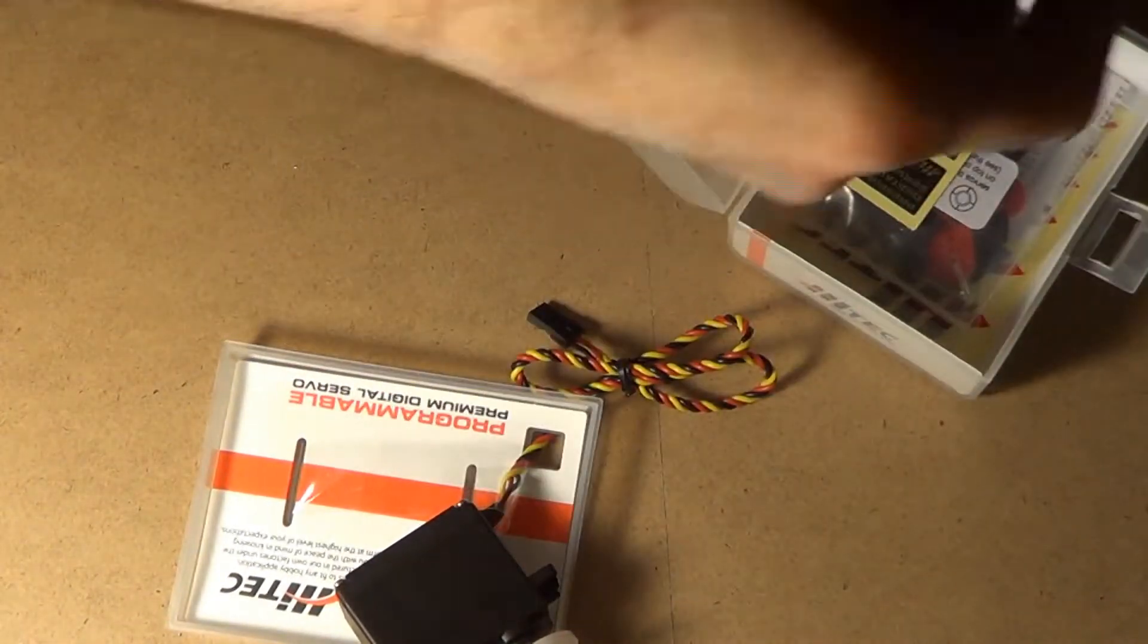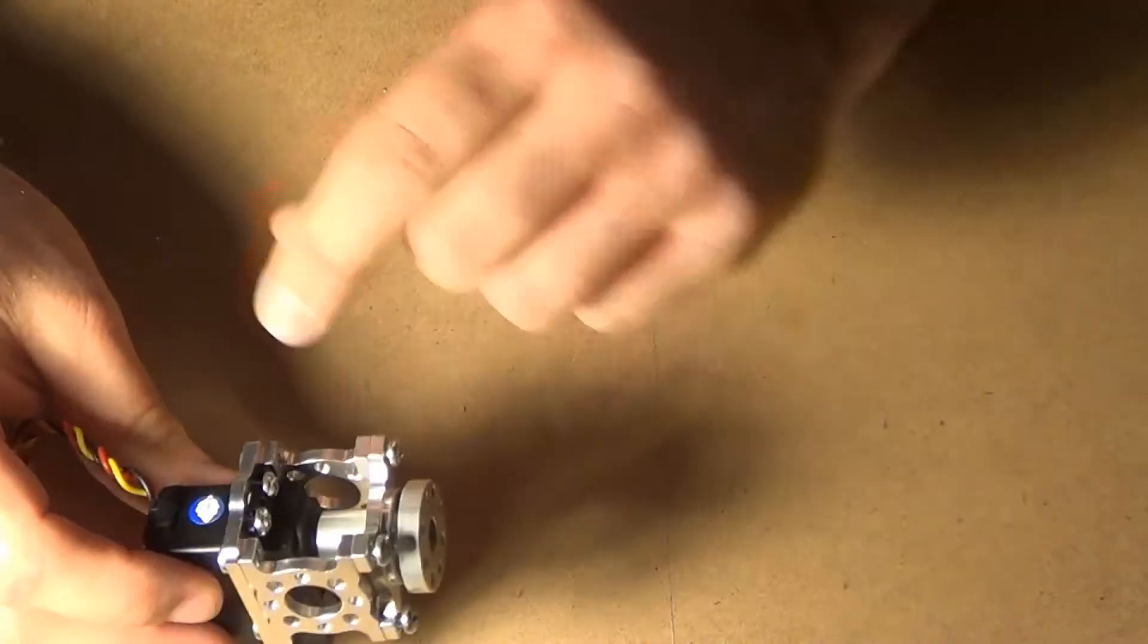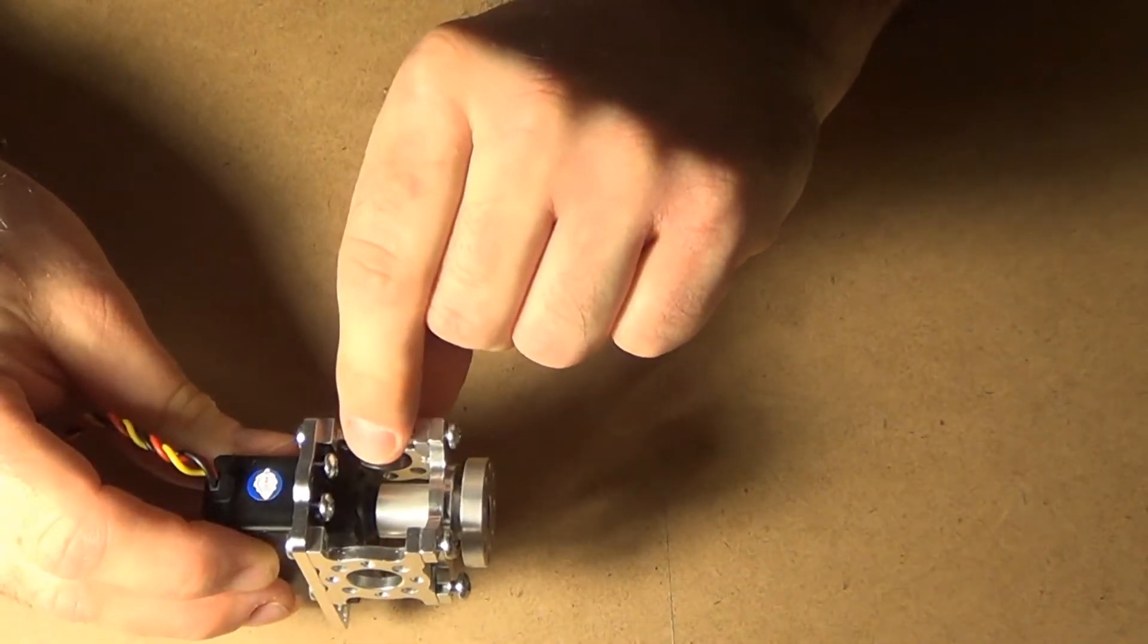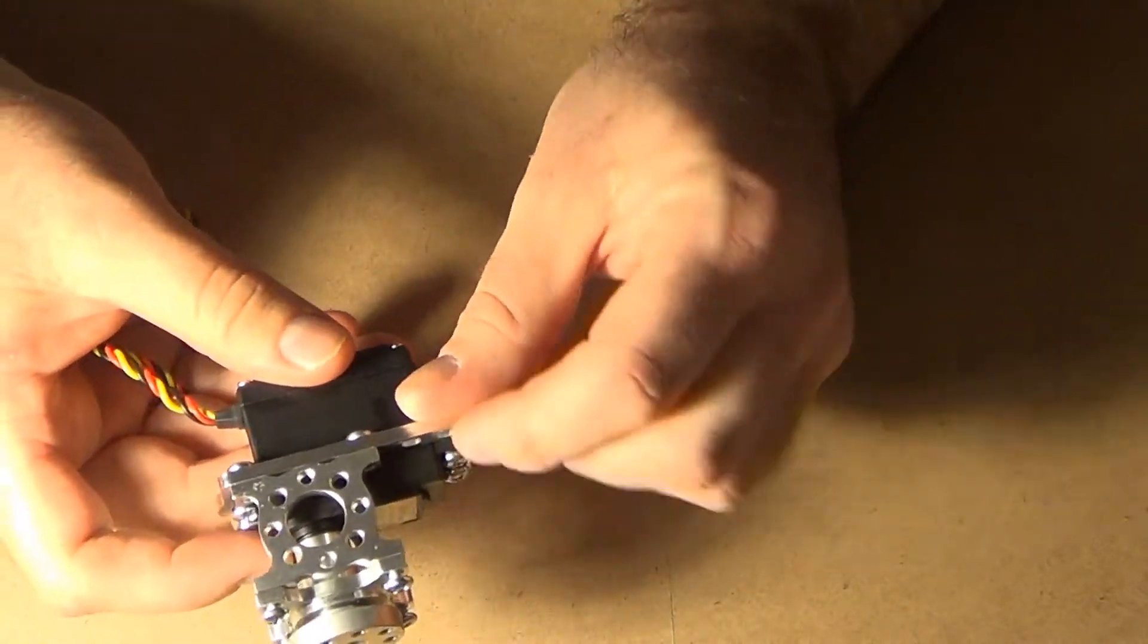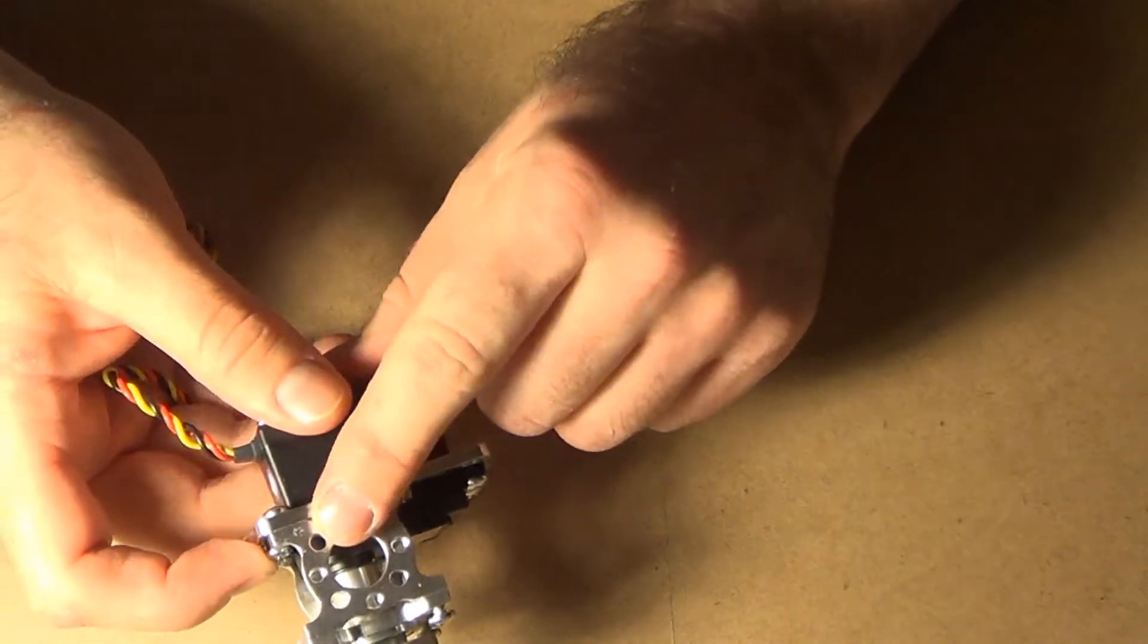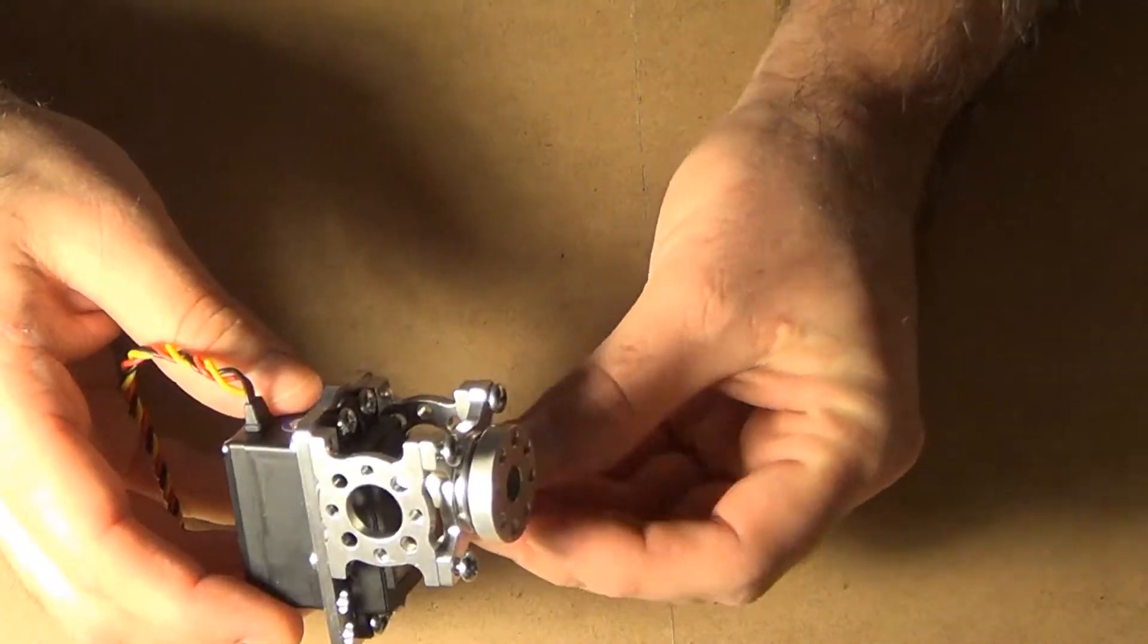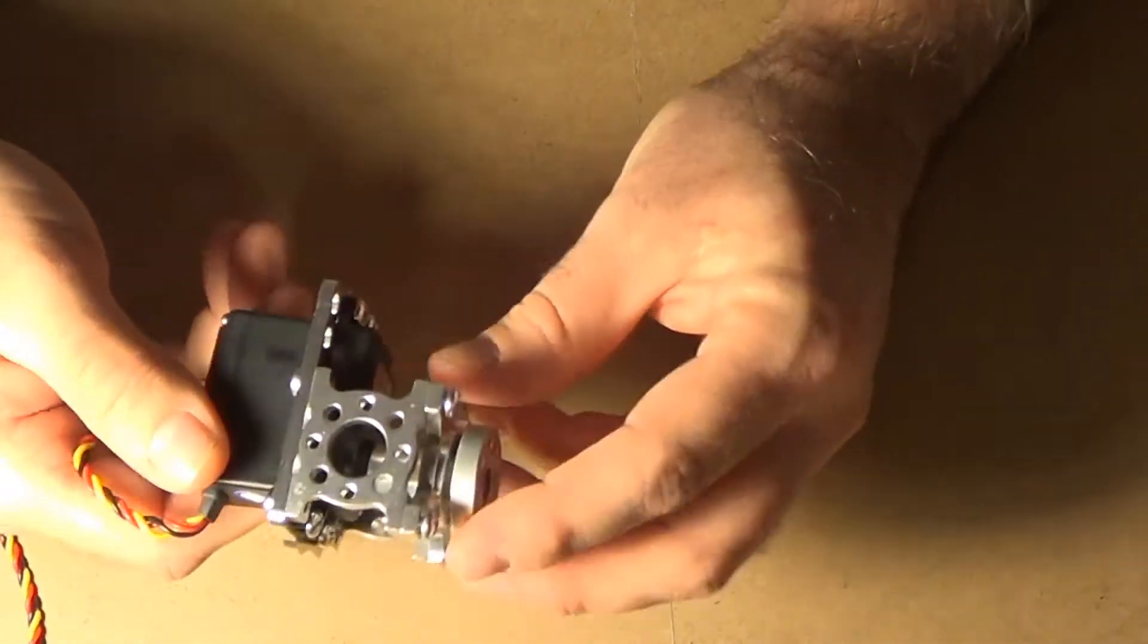So I did actually put one together already with a servo and it ends up looking like this. So the shaft is actually connected to the servo here. The hub plate is here and here and then you also have the actual servo plate itself which is here.